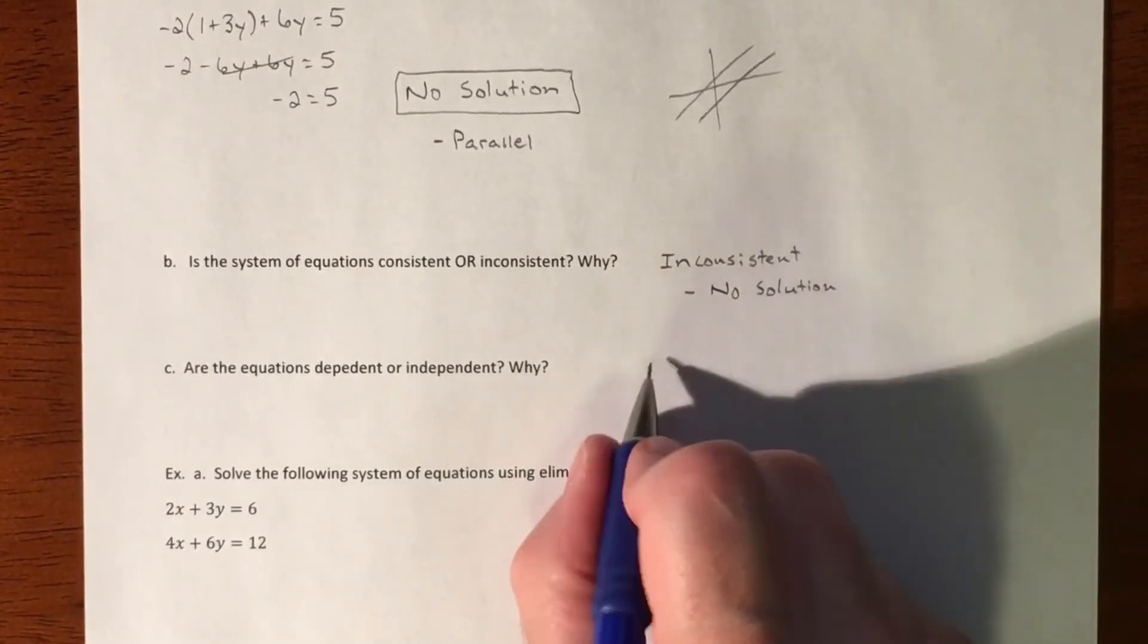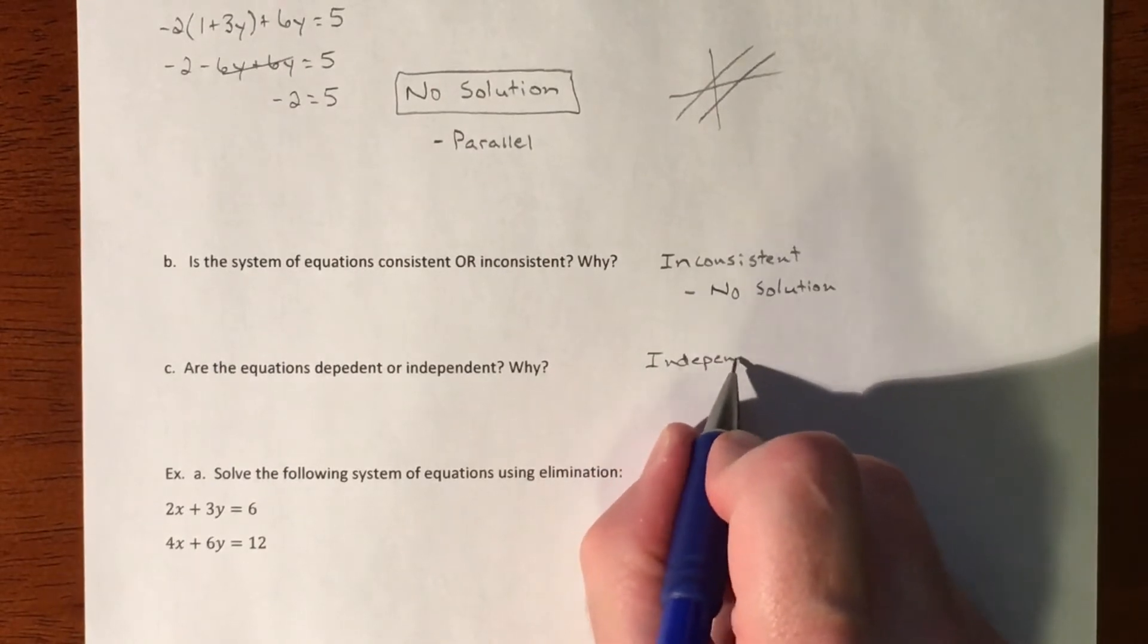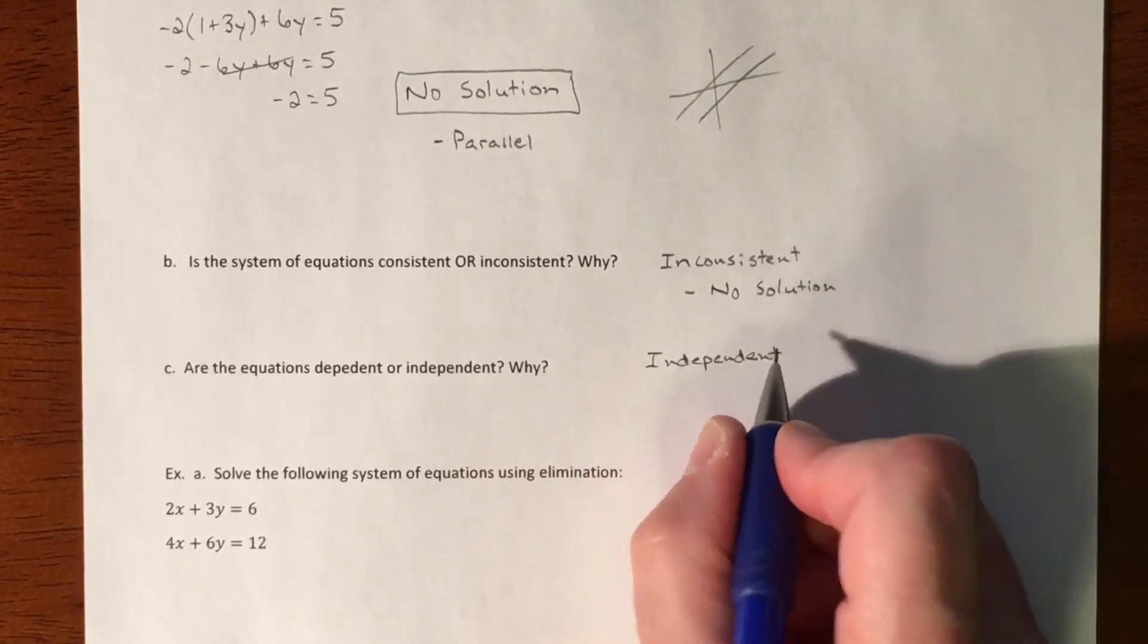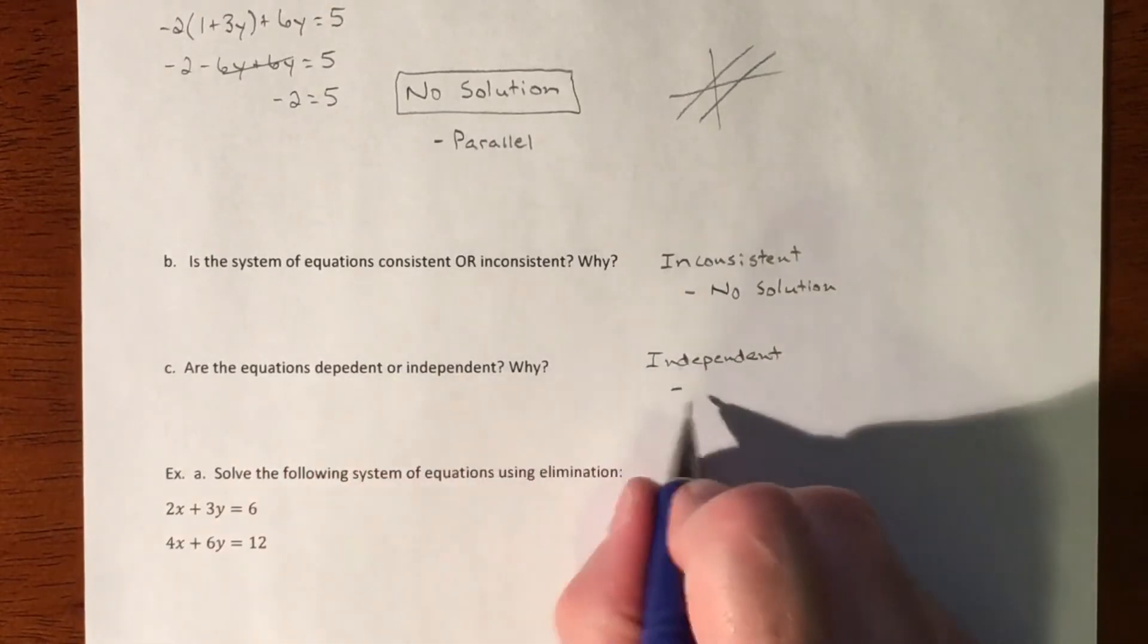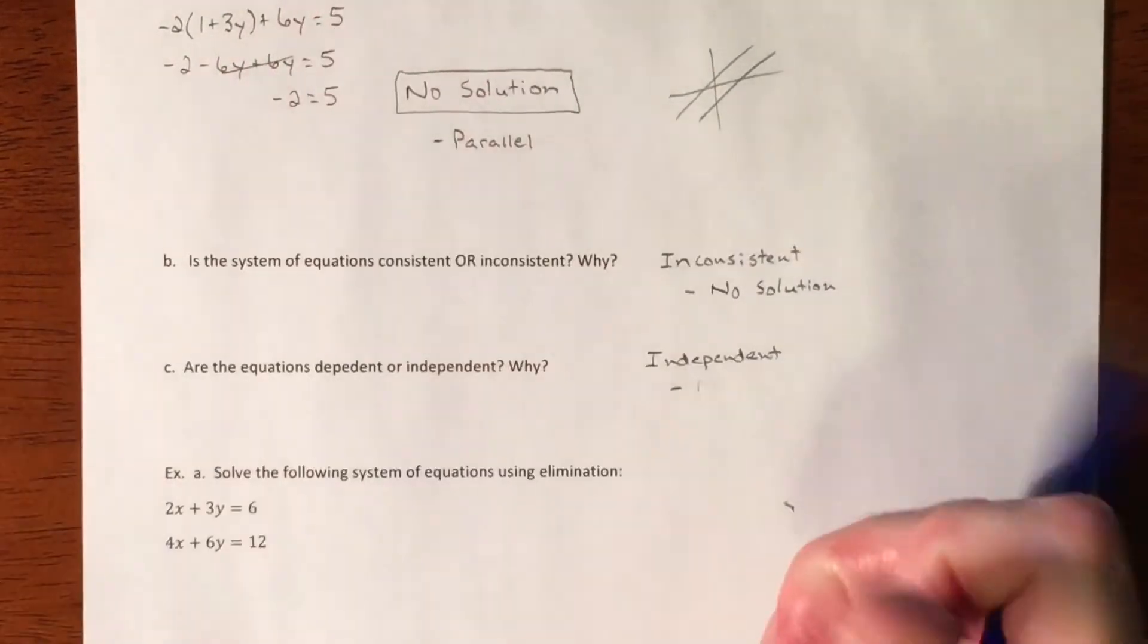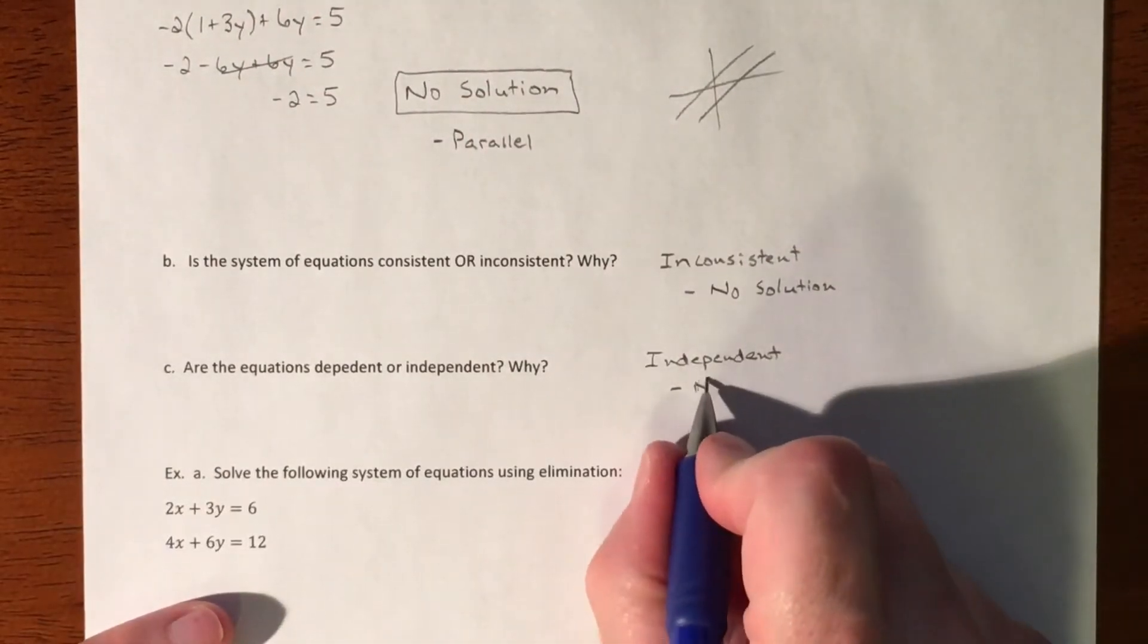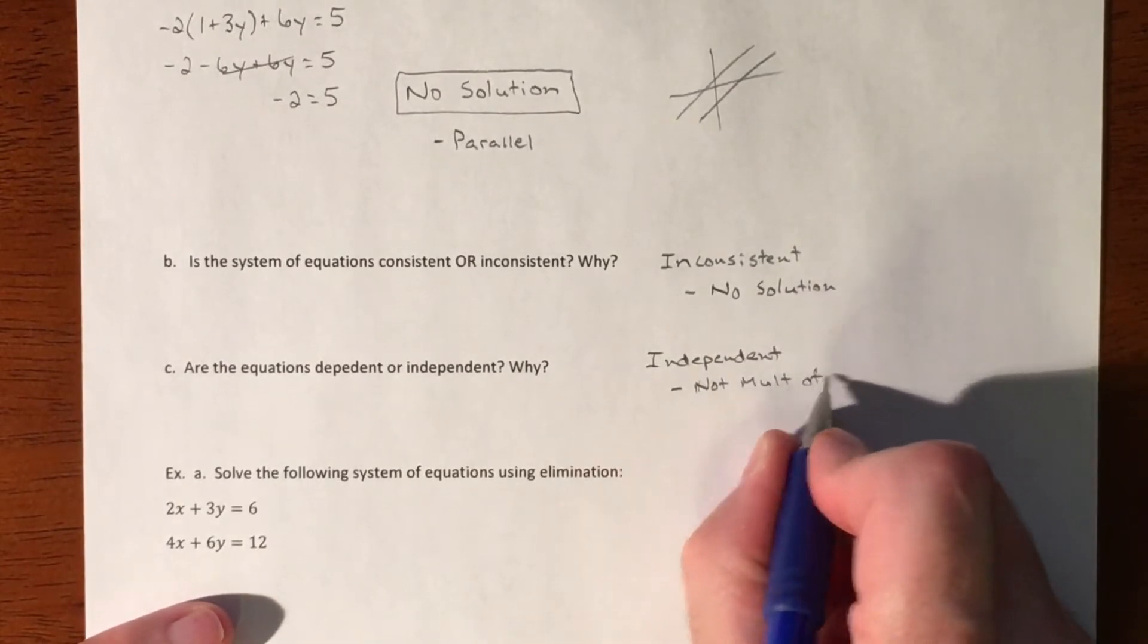And then inconsistent is always independent of each other. The justification is to be dependent means they're multiples of each other. These are not multiples of each other.